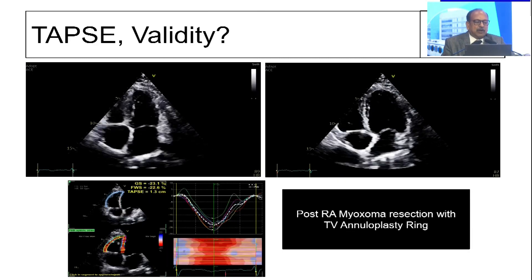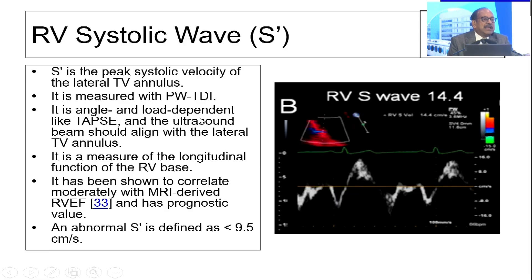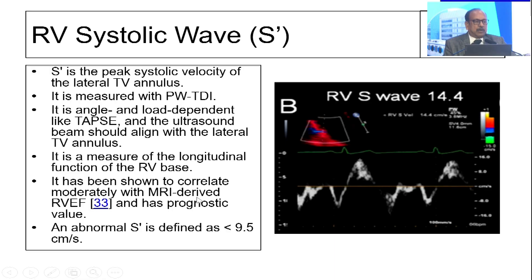The next important factor is RV free wall TDI or tissue Doppler imaging. It's a pulsed wave evaluation, slightly angle dependent as well as load dependent. If your angle is not correct, you are going to underestimate it. The normal value is more than 9.5 cm/s. Anything less than 9.5 is considered abnormal.